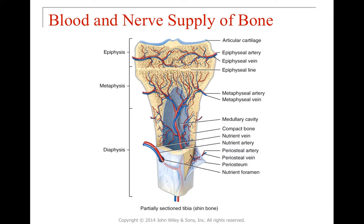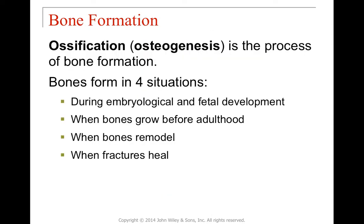How is bone formed? Bone is formed by a process called osteogenesis, or ossification, and it occurs in four situations: normally during embryological and fetal development; during a growth spurt just before adulthood; when fractures are healing; and when bones need to remodel. The epiphyseal growth plate determines whether you have finished growing — if it is compacted you have, if it is still elongated you are still growing.